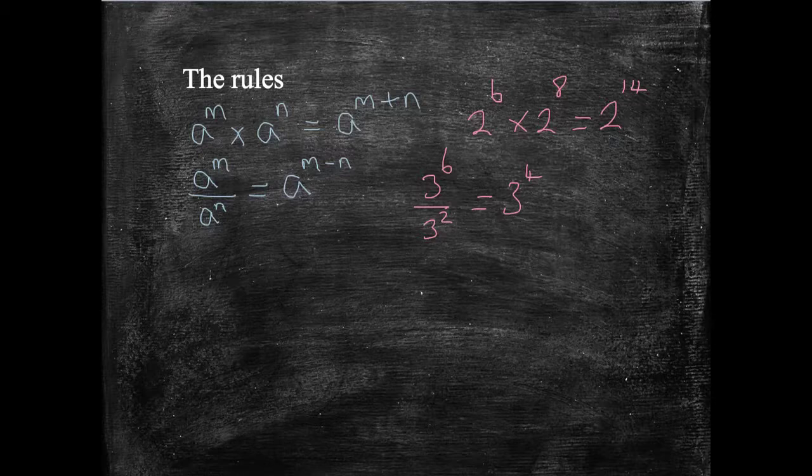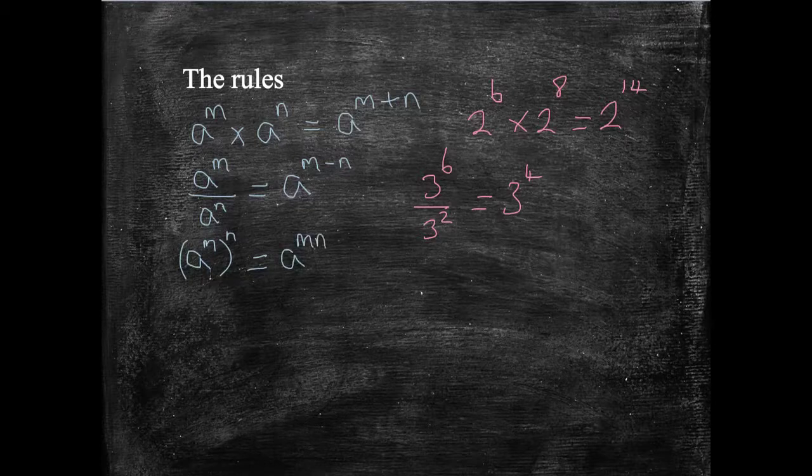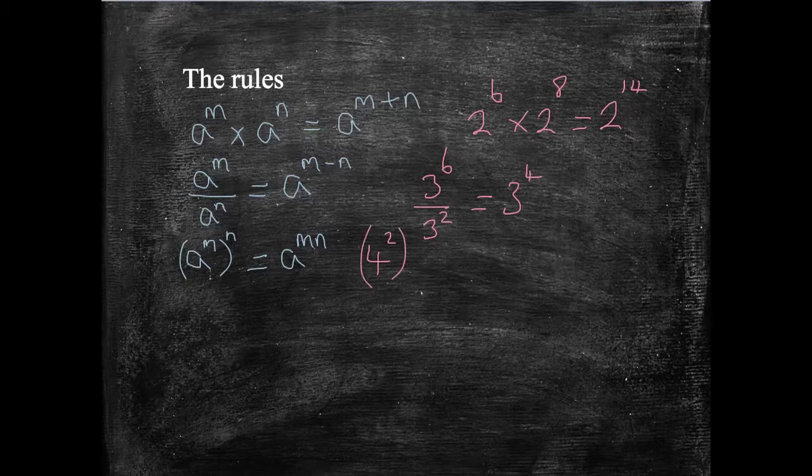Let's keep going. The next one, if I've got a number or a letter to a power, M, and that's in brackets, and it's all raised to a new power, then it's the same as multiplying the powers together. So A to the M times N. And again, I'll give you an example. If I've got 4 squared all to the power of 3 is the same as 4 to the power of 6. So I've multiplied my powers together.